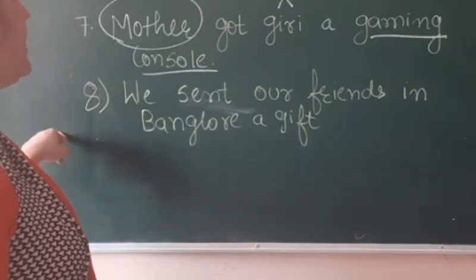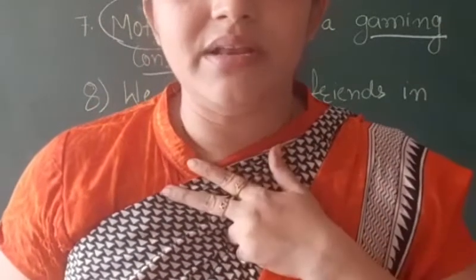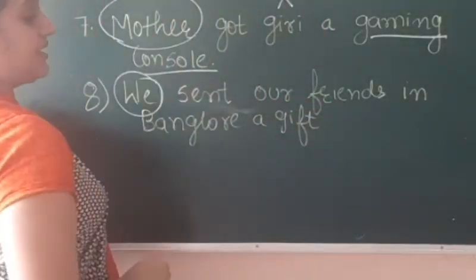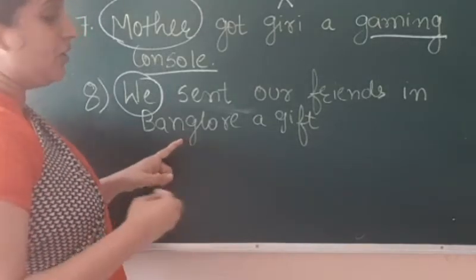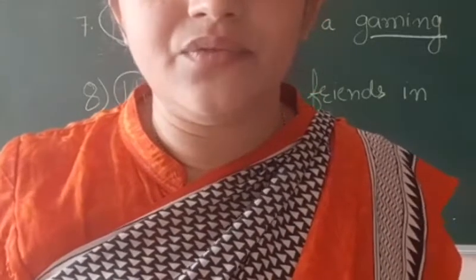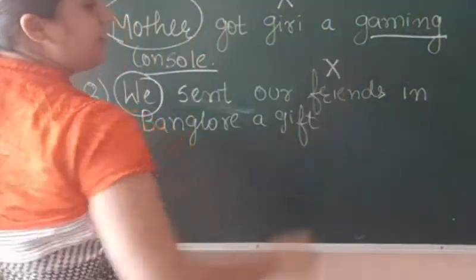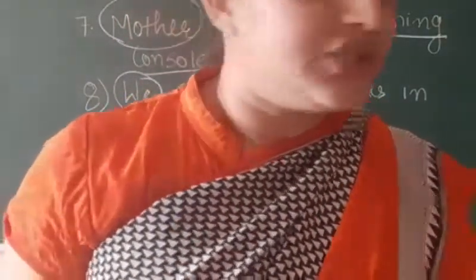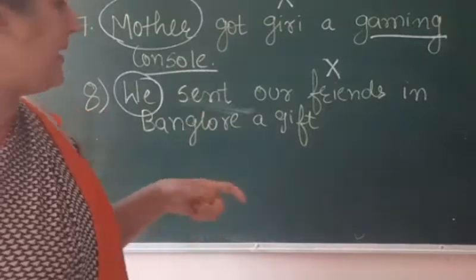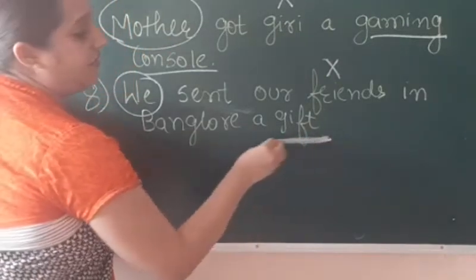We send our friends in Bangalore a gift. Here, who is the subject? We send — so, we will be the subject, because we performed the action. To whom have we sent the gift? To our friends. Friends will be the receiver — friends will receive the gift. So, friends will be the indirect object, because they are receiving the gift from us. And what will be the direct object here? They are receiving the gift. So, gift will be the direct object.